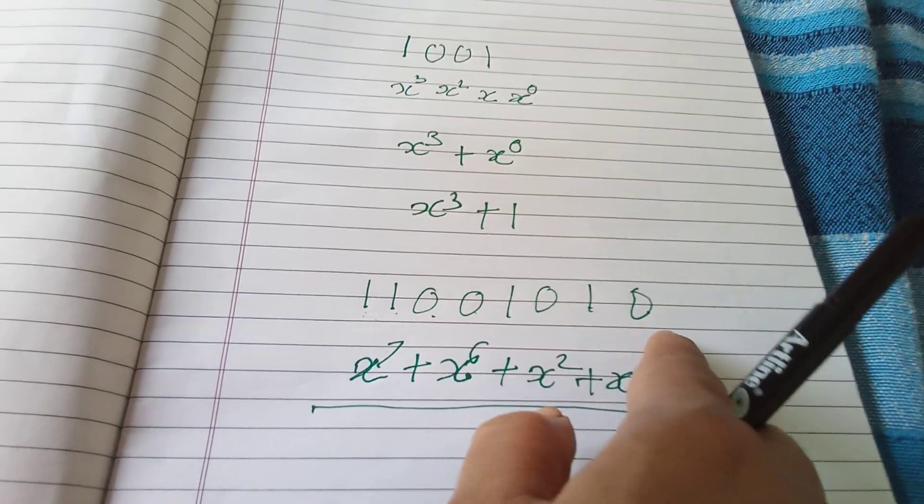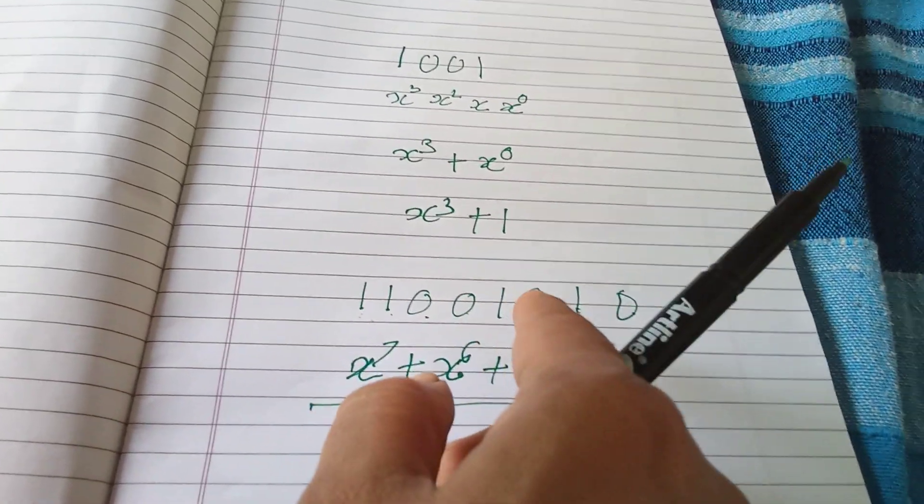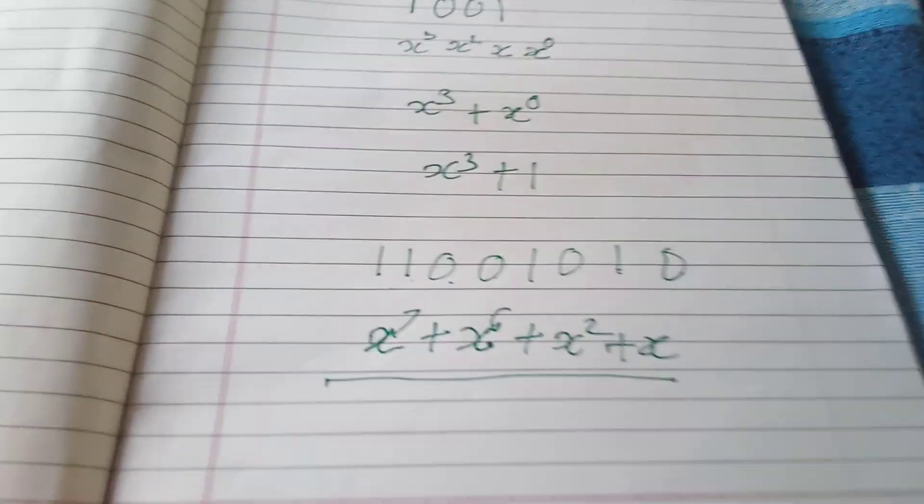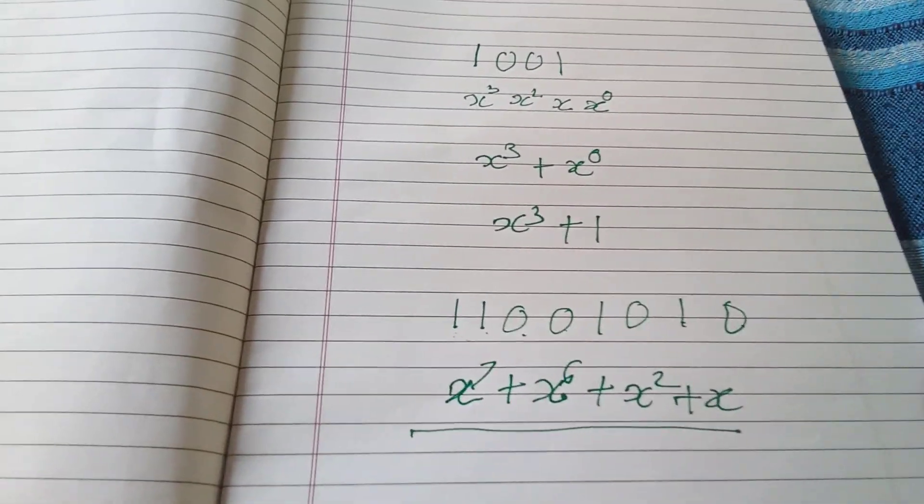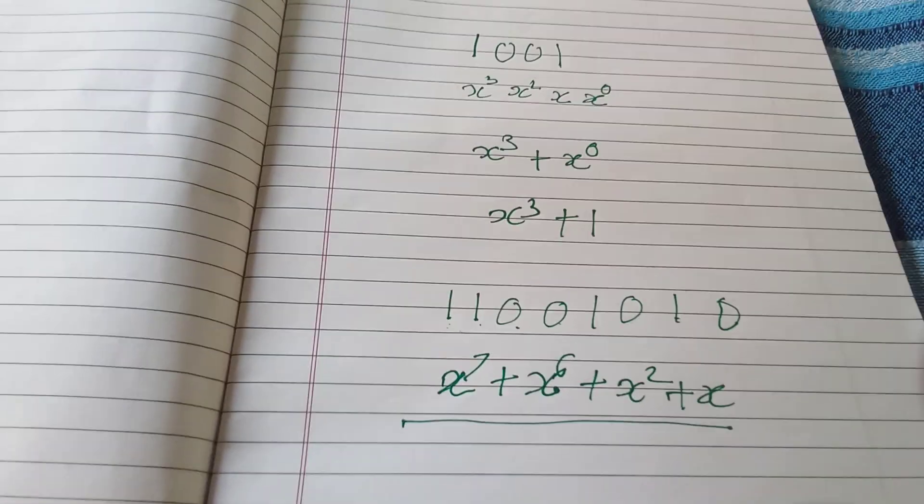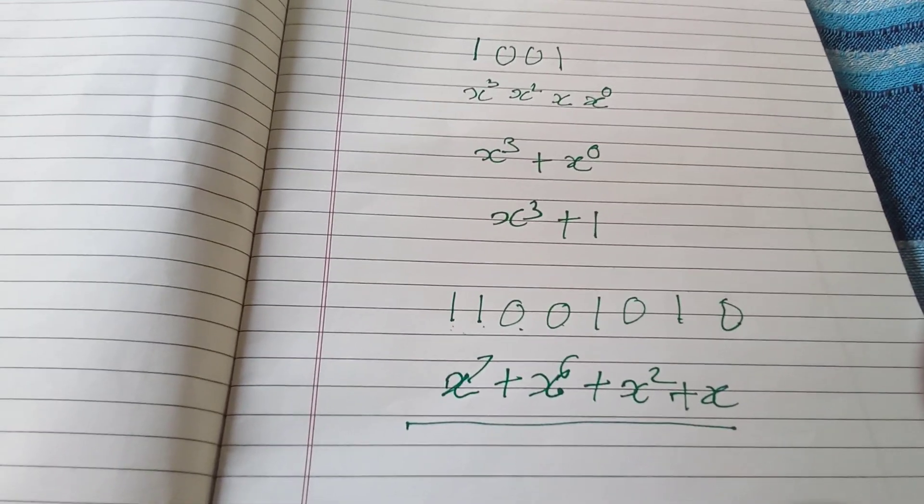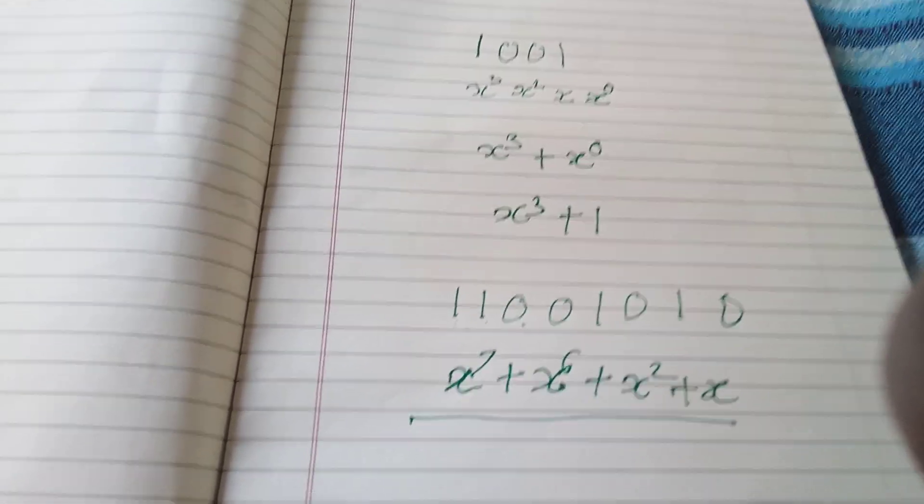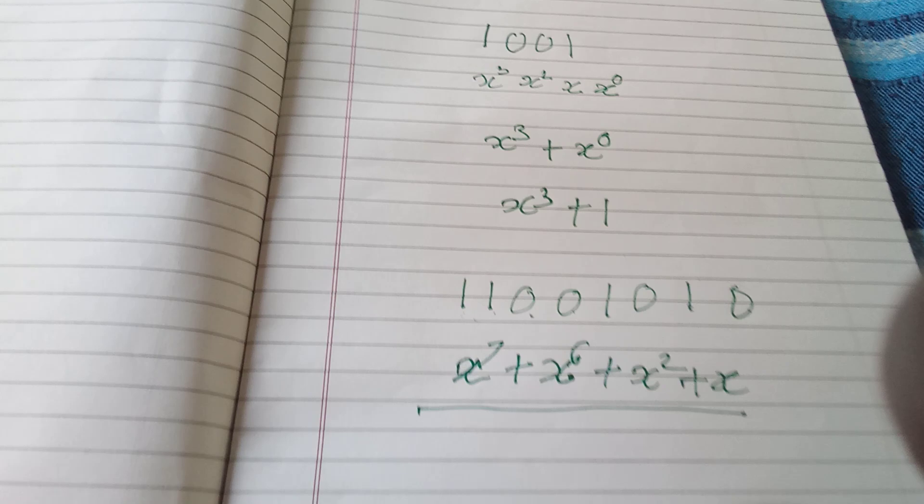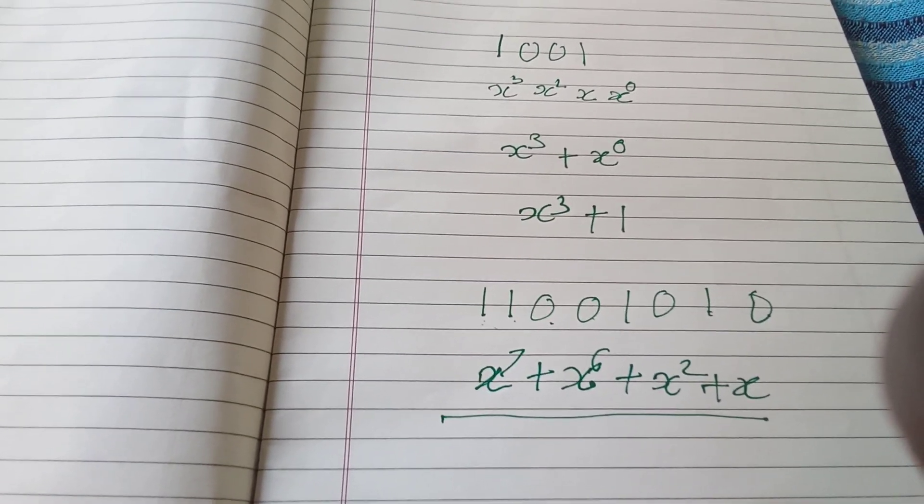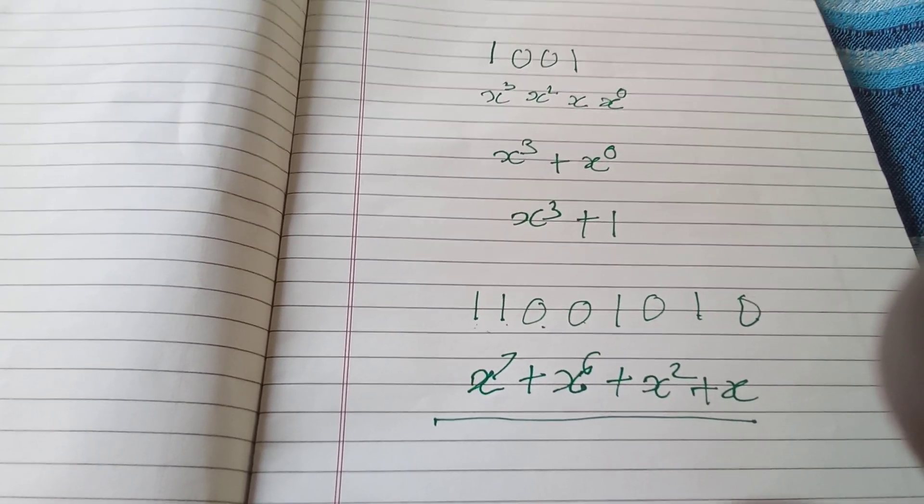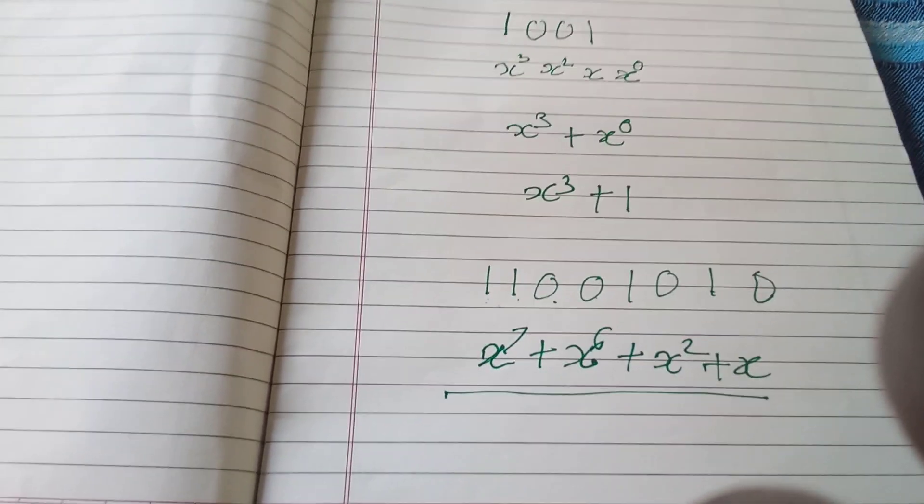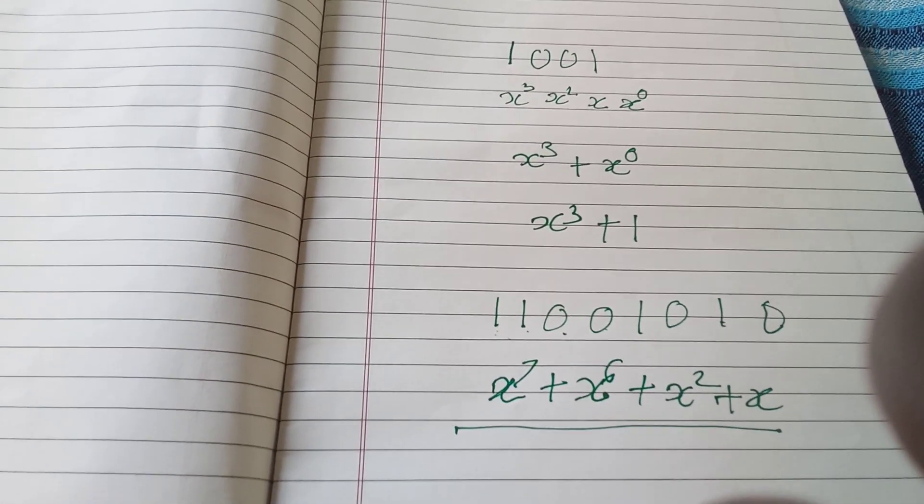And all these are coefficients of those powers. So if zero coefficient is there, then don't take that power of x. So this is important because if you are not able to form the message polynomial, then you will not solve the cyclic code problem. That's why this video is made, so that you will get clear understanding about how to form the message polynomial.